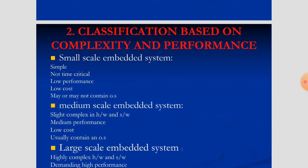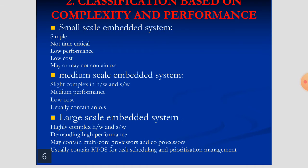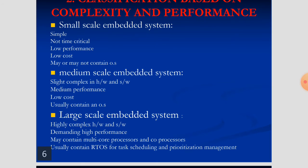Classification based on complexity and performance: small-scale embedded systems are for very simple task applications, not time-critical, with low performance and low cost. They may or may not contain an OS. Examples include a remote control or a wristwatch. Medium-scale embedded systems are slightly more complex than small-scale, have medium performance, low cost, and contain an operating system.